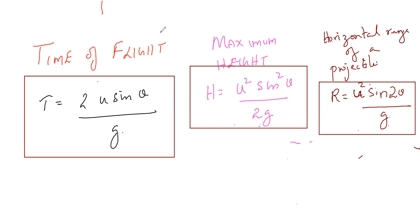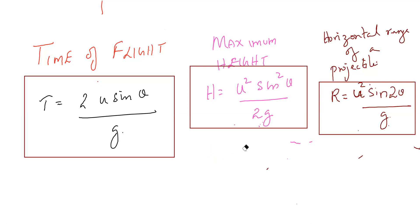Please copy down these formulas — I will tell you their importance. In entrance examinations for class 11, questions should be attempted in less than 10 seconds. To answer within 10 seconds you need the direct formula. They will give you the initial velocity U and just ask you to find the time of flight, for example.